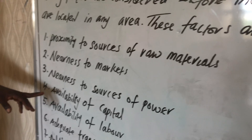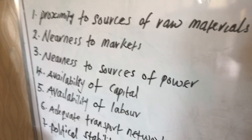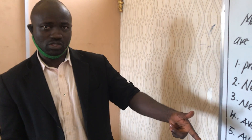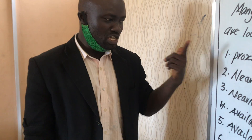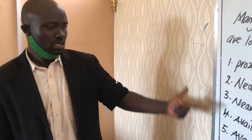The third factor is nearness to the source of power, such as electricity. Nearness to the source of power is another thing to be considered — is it available? Is it always ready? That is another major factor to be considered in terms of industrial location.